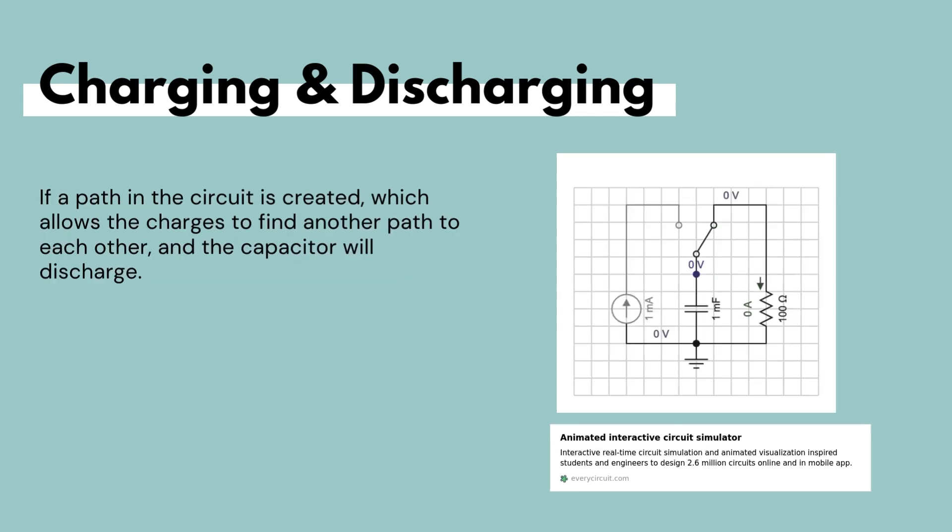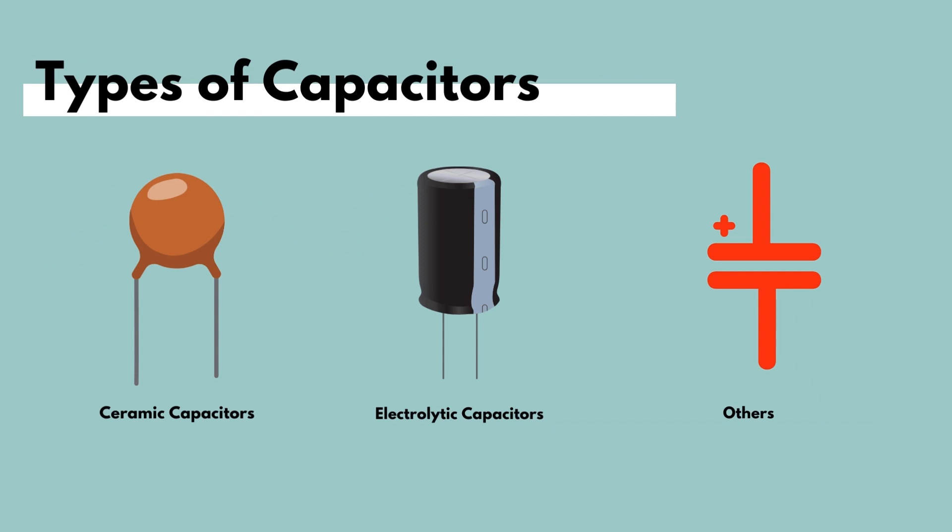If a path in the circuit is created for the capacitor to discharge, then the charges will find another path to leave the capacitor and discharge. Now that we've gained a little bit of an idea of how capacitors work...